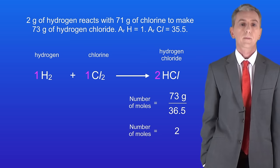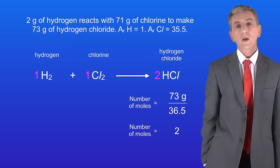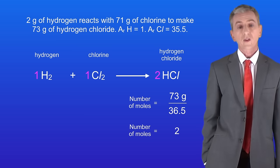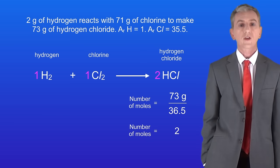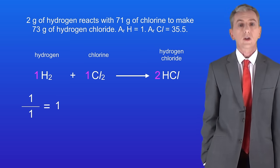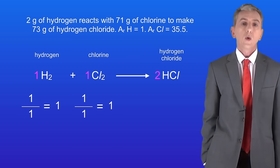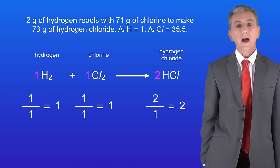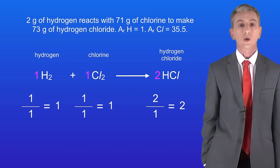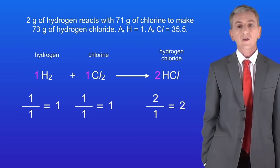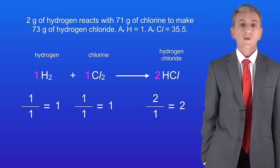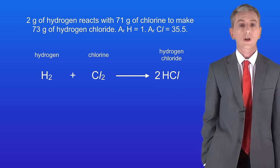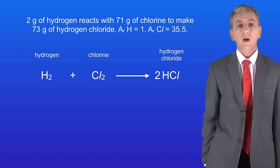Now we're almost finished. We've got to look again at the large numbers and make certain that these numbers are the lowest possible ratio. To do that we divide all of them by the smallest number, which in this case is 1. Dividing 1 by 1 gives us 1 for hydrogen, 1 by 1 gives us 1 for chlorine, and 2 by 1 gives us 2 for hydrogen chloride. So these numbers are already the lowest possible ratio, meaning this equation is now fully balanced.